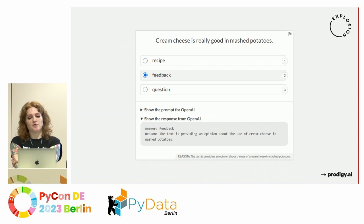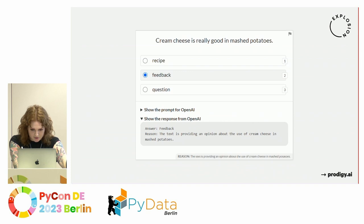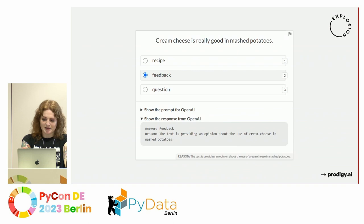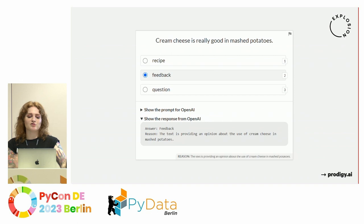The same also works for multiple answers — a different interface in Prodigy with multi-select. We pre-select what we get from the large language model, and here it chooses from three options, selecting 'feedback' because the text is providing an opinion about the use of cream cheese in mashed potatoes. It gets it right. We're still trying out different workflows, but these are some of the examples that were very promising.